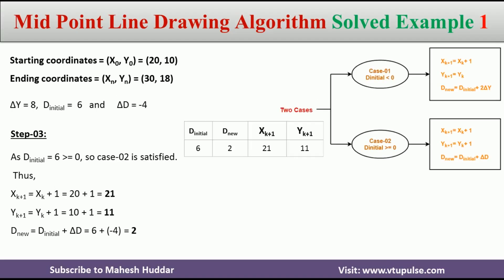In step number 3, we need to select one of two cases — case 1 or case 2 — depending on the value of d_initial. In this case, d_initial is 6 and delta_d is minus 4. Because d_initial equals 6, which is greater than or equal to 0, we need to select case number 2. In case number 2, xk+1 equals xk+1, yk+1 equals yk+1, and d_new equals d_initial plus delta_d. Using these equations, d_initial is 6, d_new is equivalent to 2, and the new point is (21, 11).